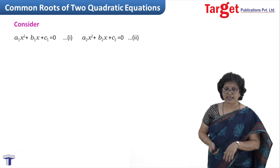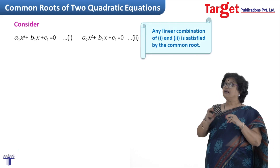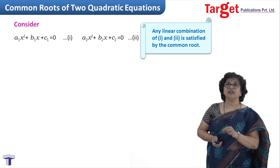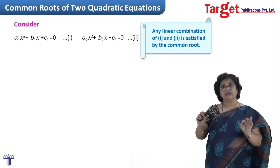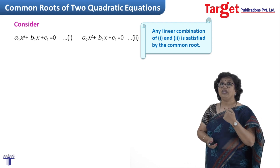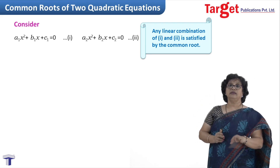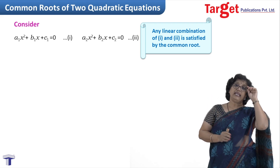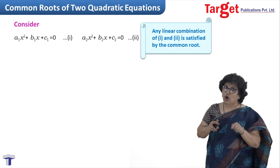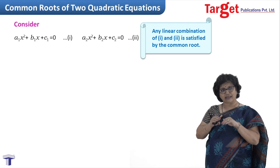When these two equations have a common root, my claim is that any linear combination of these two equations will give you one equation which is satisfied by that common root. This is a standard result in algebra. Linear combination means you multiply the first equation by some constant k1 and the second equation by some constant k2, and then k1 times the first equation plus k2 times the second equation equals 0. That is called linear combination.